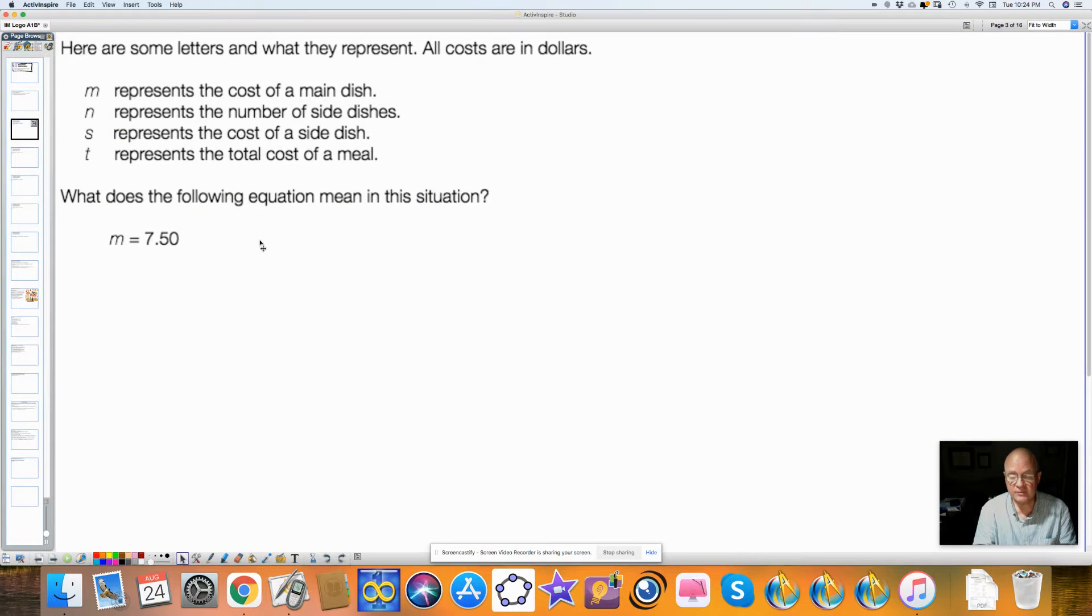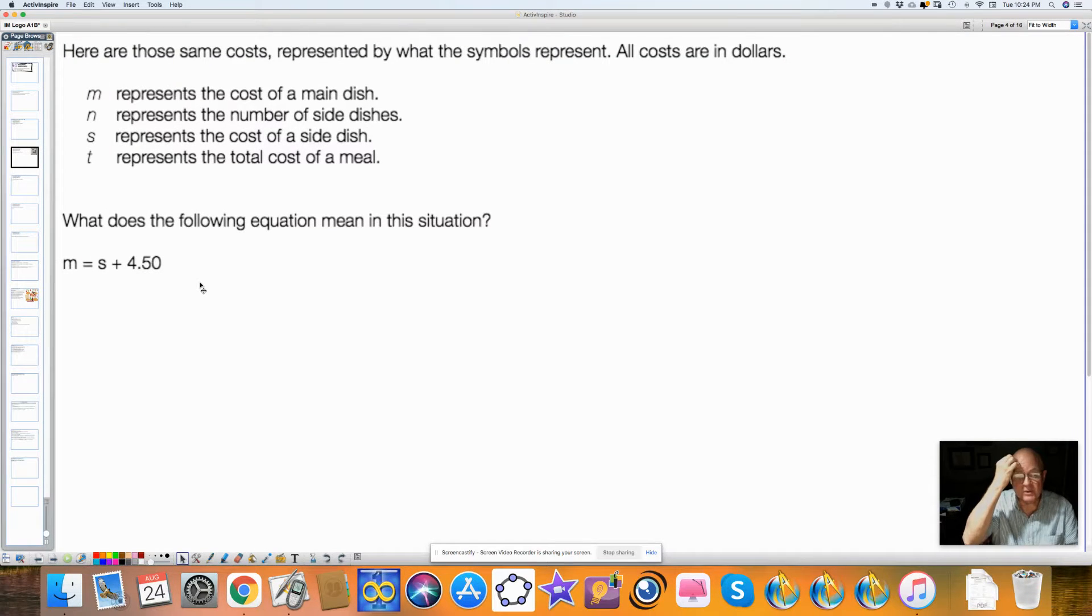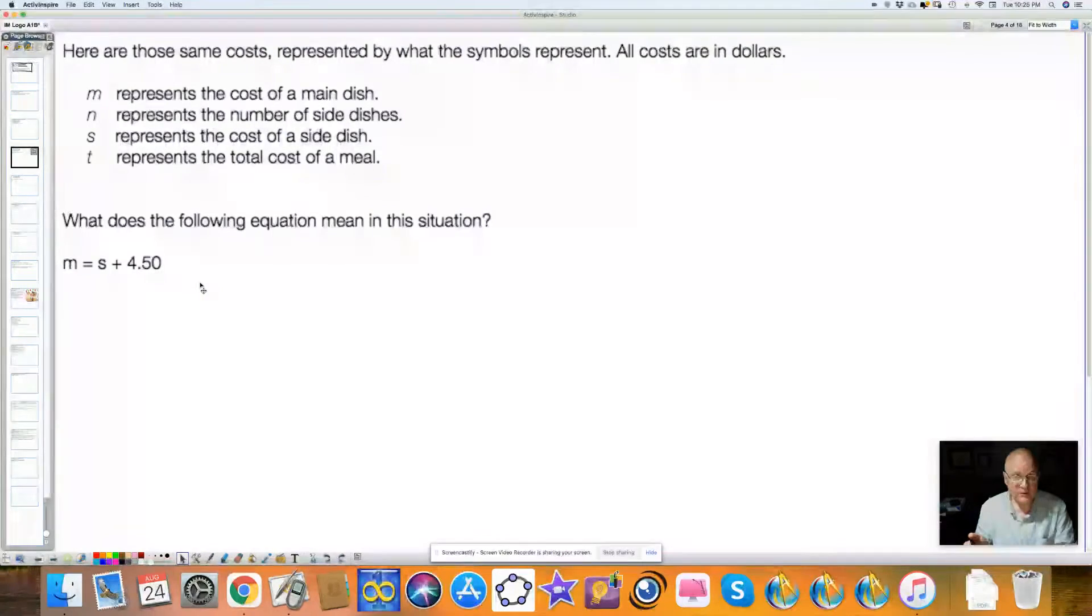So you're supposed to answer, what do each of these equations mean? Well, M is equal to $7.50. The cost of a meal is $7.50. That's what that means. Here's one. M is equal to S plus $4.50. Now don't tell me M is equal to S plus $4.50. I know what the equation is. Tell me what it means. The equal sign means is, or is the same as. So you could say the cost of a meal is equal to the cost of the side dish plus $4.50. Now, I didn't tell you here that the main dish was $7.50, but if it was, then you could find out what the S is, what the side dish would cost.